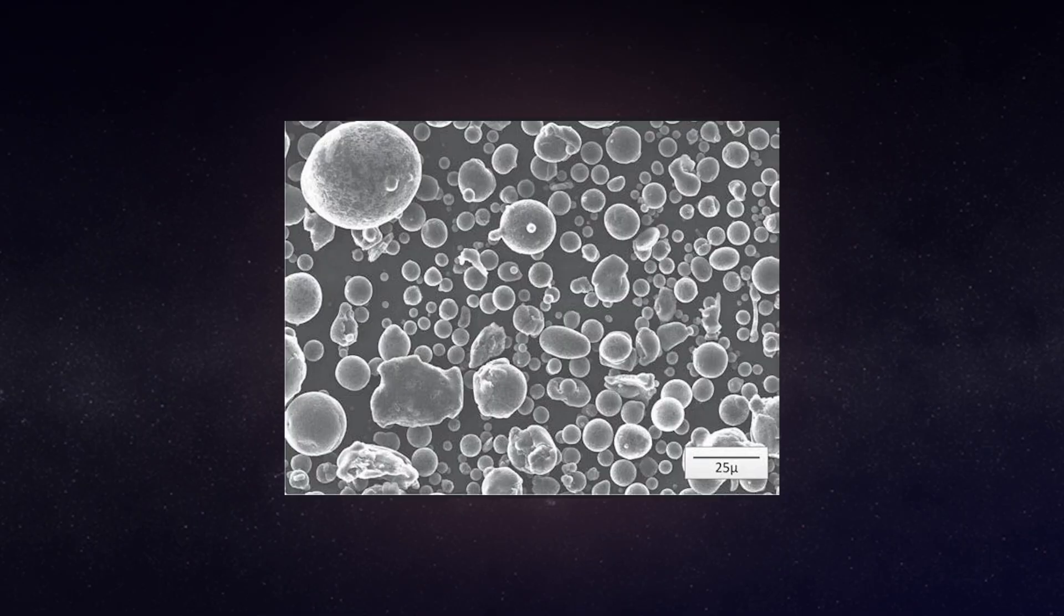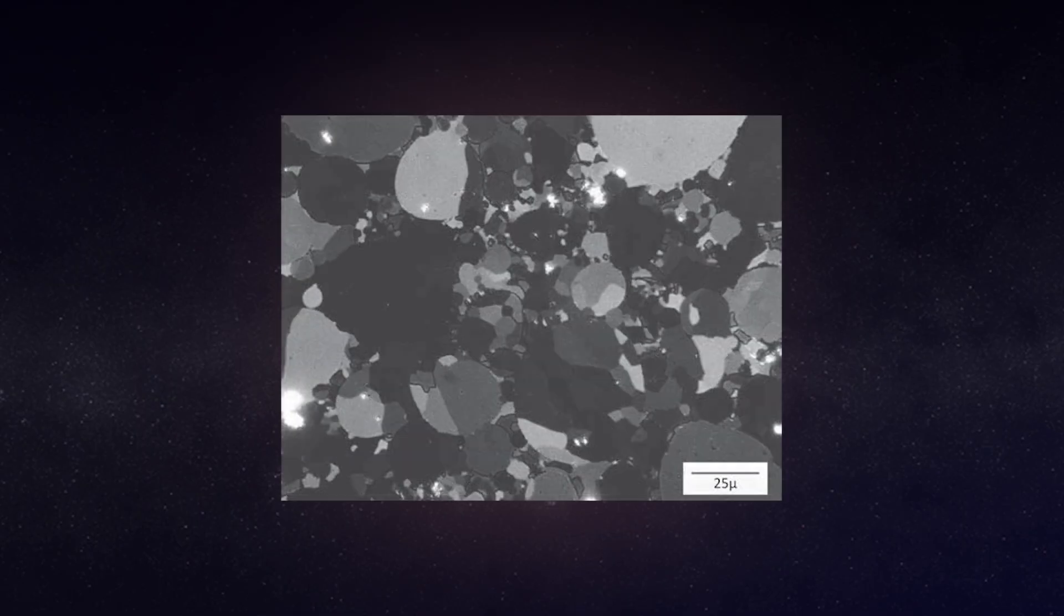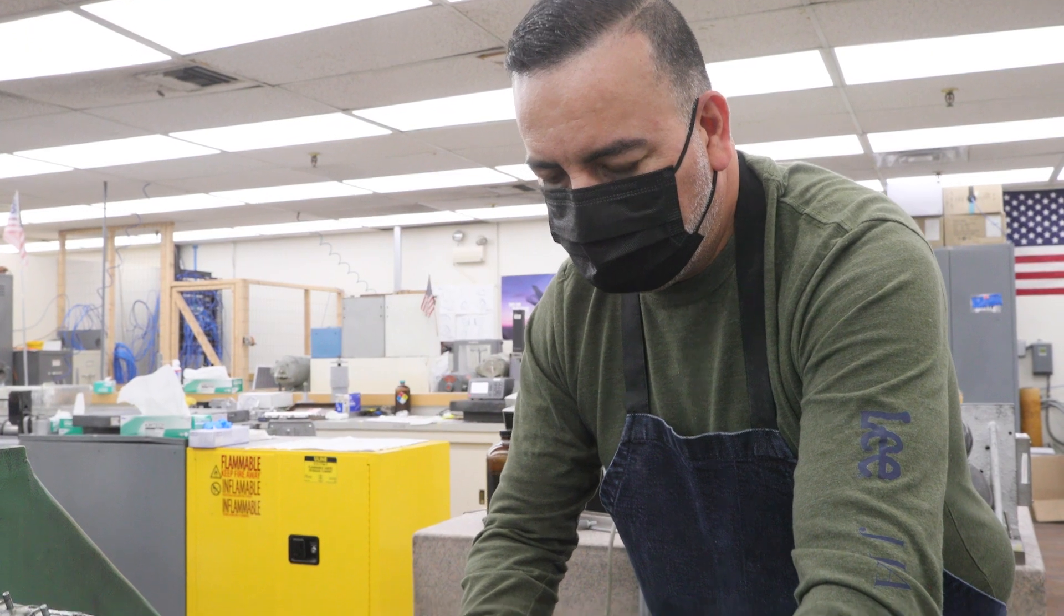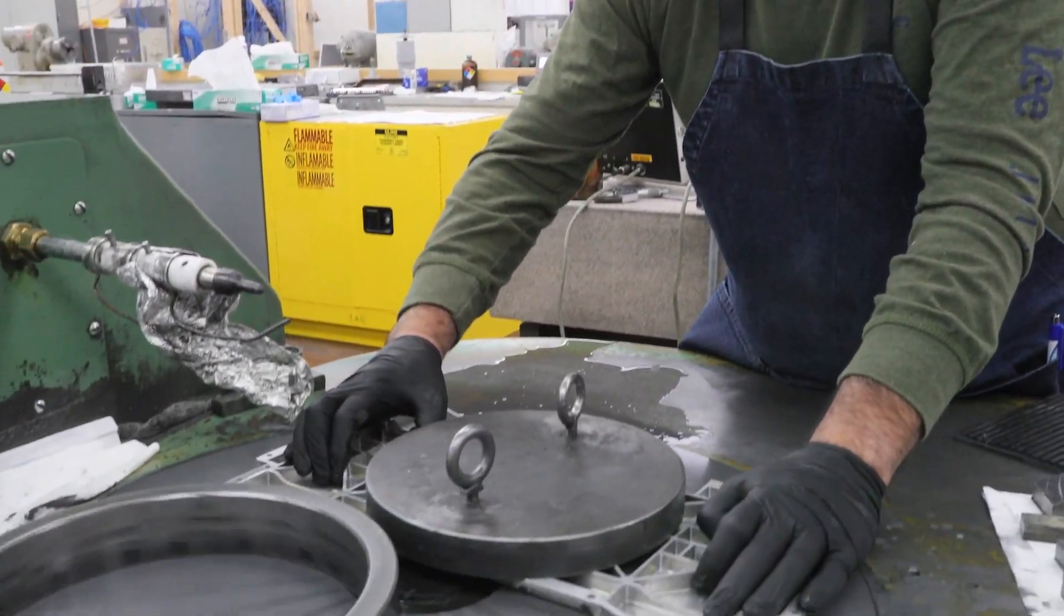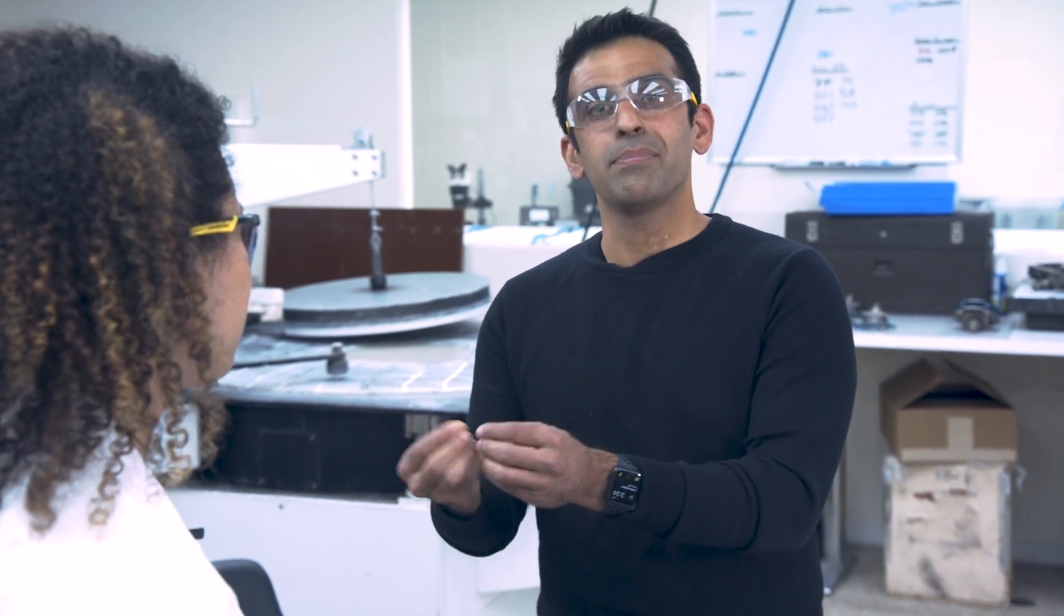Machining beryllium requires extreme care. Beryllium actually is a powder that is pressed together and requires very light cuts. Any small mistake, it would crack and there would probably be a piece that would chip off. And you've lost a part that could be worth anywhere between $1,800 to $2,000 a pound.